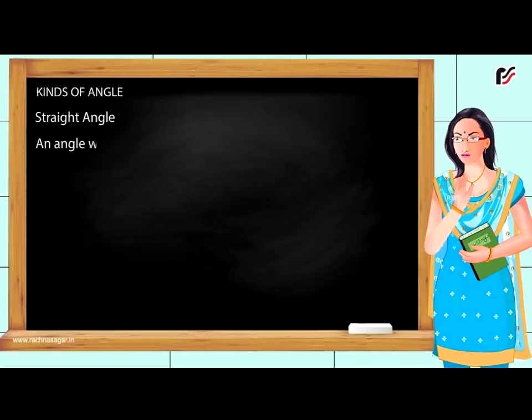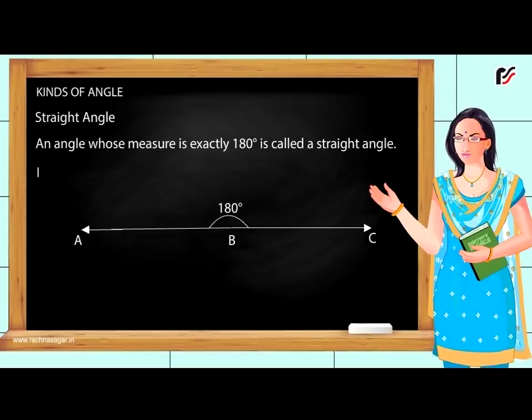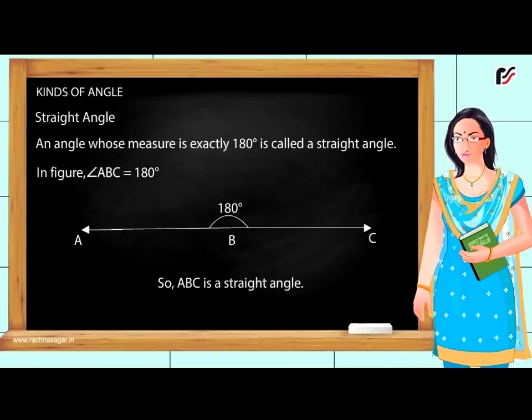Straight Angle: An angle whose measure is exactly 180 degrees is called a straight angle. In the figure, angle ABC is equal to 180 degrees. So, ABC is a straight angle.